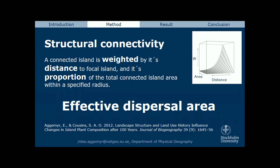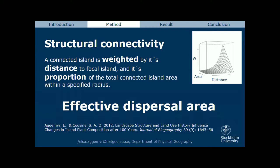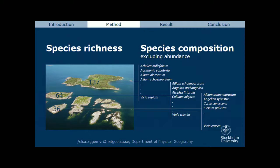Then I measure diversity — mainly richness and composition. Species richness is just the number of species present on each island, with no information about identity. Species composition includes the identity of the species but no abundance — it's only presence-absence data.